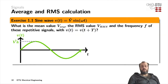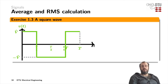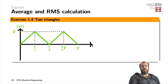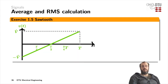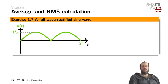Now that you've learned about the parameters of an AC signal, it's your time to practice finding the average value and the RMS value of various time-repetitive signals: a sine wave, a triangle wave, a square wave, two triangles, a sawtooth, a full wave rectified sine wave, and a half wave rectified sine wave.